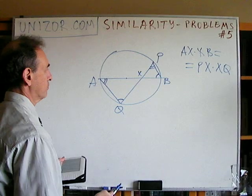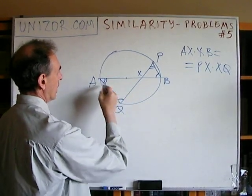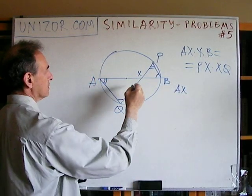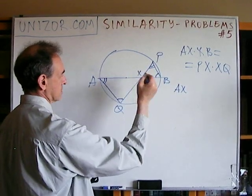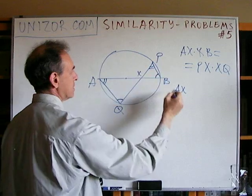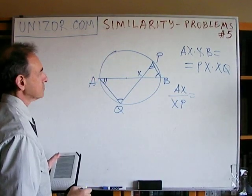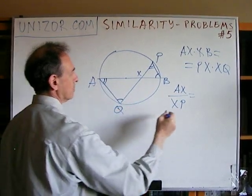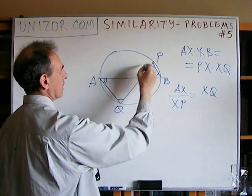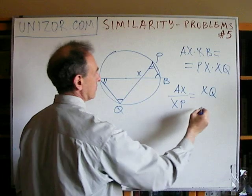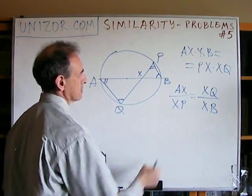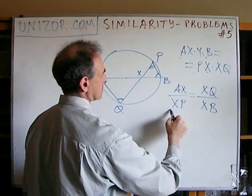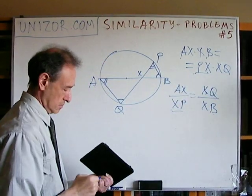Now just use this similarity to prove the equation, because this is simply a proportion. The side in the bigger triangle across this angle is AX; the side in the smaller triangle opposite the same angle is XP. Then taking another pair of angles: opposite this angle in the bigger triangle is XQ, and in the smaller triangle it's XB. So AX times XB equals PX times XQ. Simple.